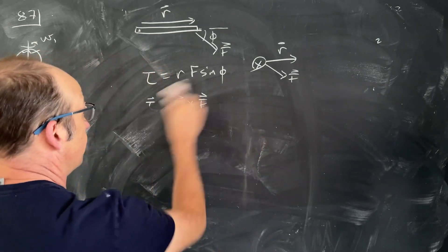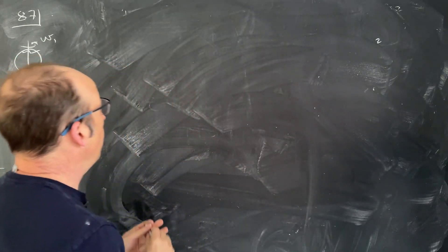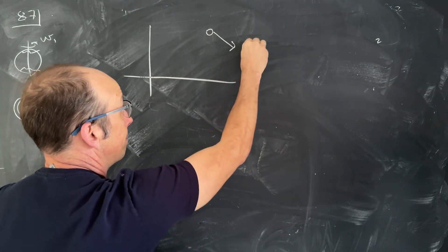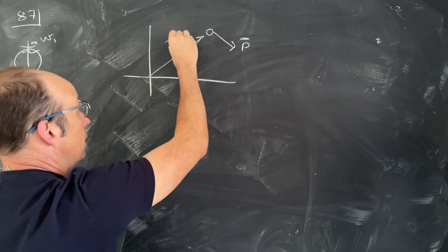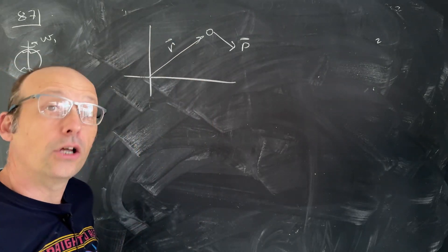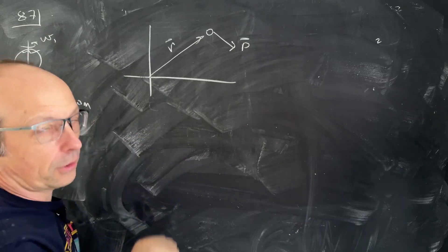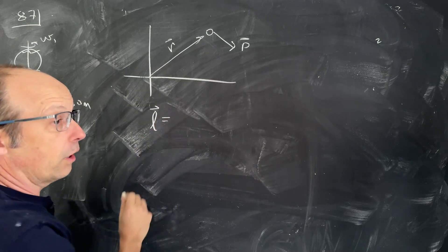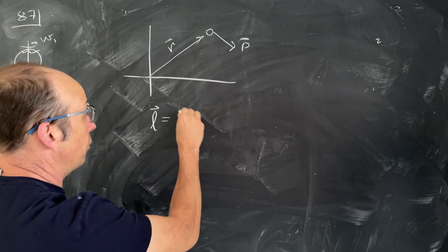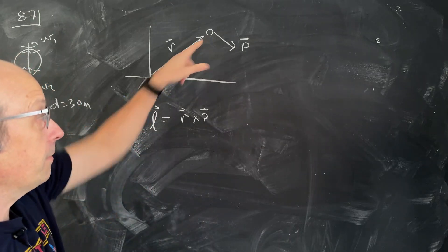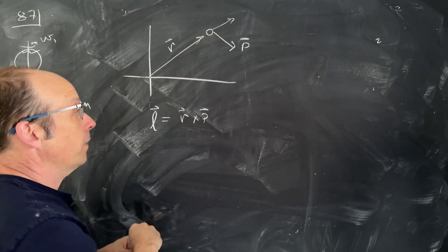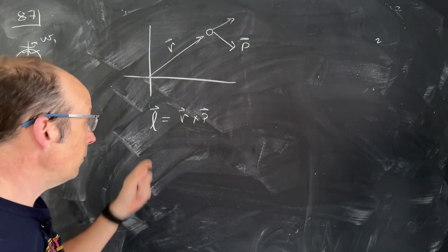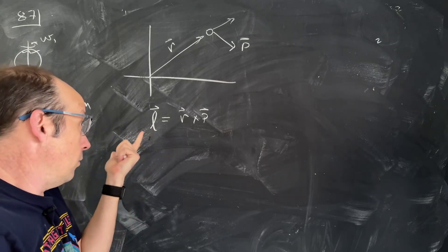If a particle is moving with some momentum p and has a position vector r, then it has angular momentum. The book uses lowercase L for the angular momentum of a particle, calculated as r cross p. Using the right-hand rule, if r is one way and p is another, the angular momentum would be into the board — in the negative z direction.